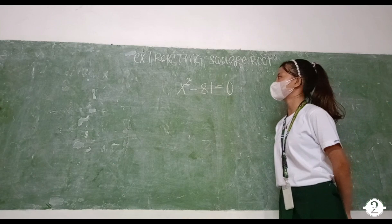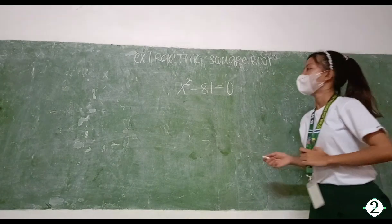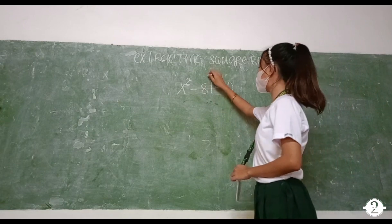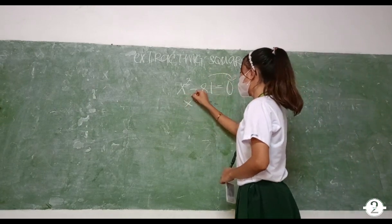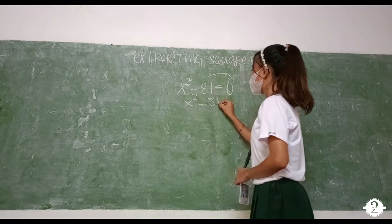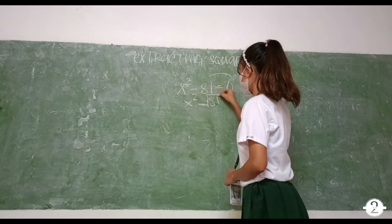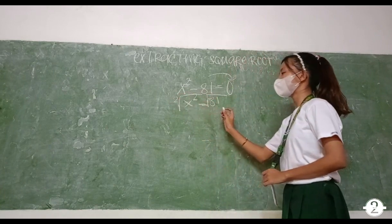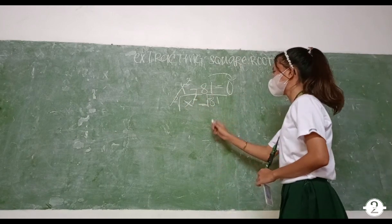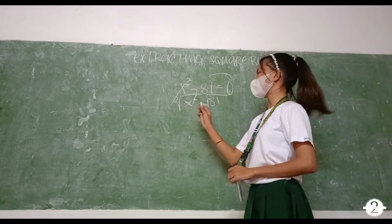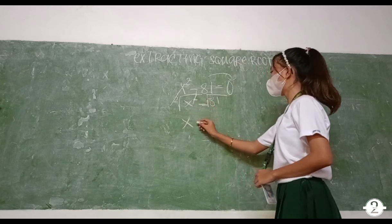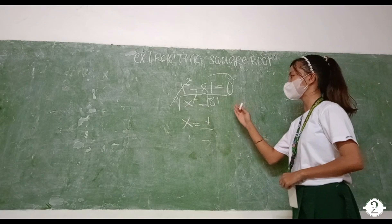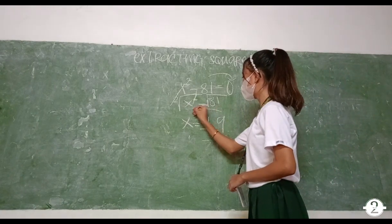Kunin naman natin ngayon ay extracting square root. Isa ito sa pinakamadaling part ng quadratic equation. Our given is x² - 81 = 0. Ang gagawin natin ngayon is yung 81, ilipat natin sa kabila, so ang nangyayari ngayon is x² = 81. Lalagyan natin siya ng radical parehas. Lalagyan natin ng isang square root dito. I-cancel natin parehas. Ang gagawin na lang is x = √81. Bring down x equals, nagiging natin ng plus or minus, and ang lalagyan naman natin dito sa 81 is yung square root ng 81, which is 9. Ayun yung final answer.